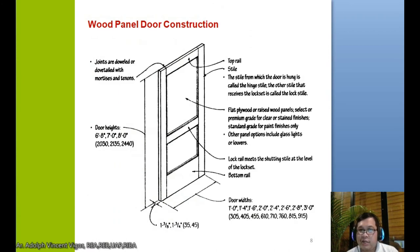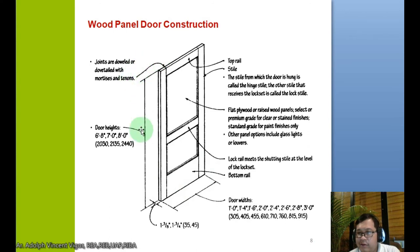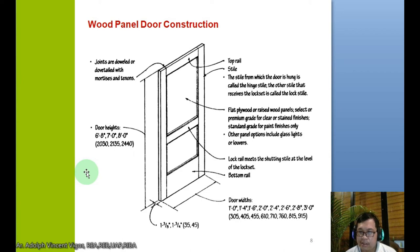For wood panel door construction — when you see a wood panel door, it is usually made from an entire block of wood. It still has a top rail, stile, flat plywood raised wood panels, a lock rail, and a bottom rail. Door height is usually around 2.1 meters as standard. Door width varies — for a main door, the width is typically 0.9 meters, or up to 1 meter in size.